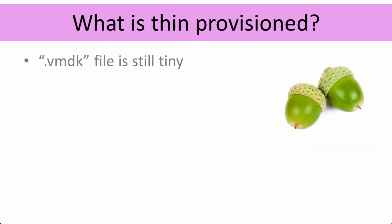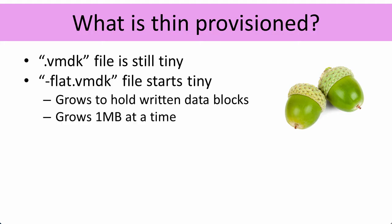Thin provisioning is a little different. The VMDK file is still tiny — still just a little metadata file. But the flat file also starts out tiny, almost zero in size, and grows every time new blocks are written to it. The flat file will hold any data block written to by the virtual machine and will grow larger as more blocks are written. On a VMFS datastore, the flat file grows in VMFS block sizes, which now is just one megabyte.